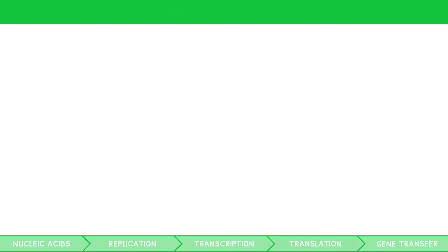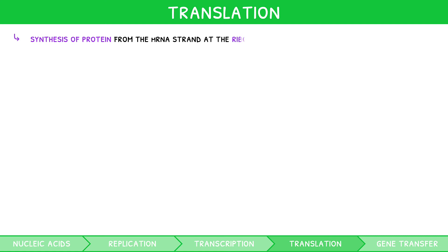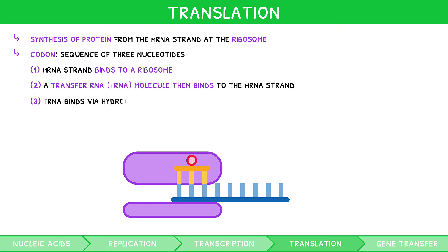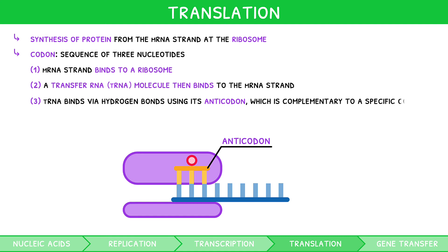So where is the production of protein? Cue translation. Translation is the synthesis of protein from the mRNA strand at the ribosome. The term codon is often used — this is simply a sequence of three nucleotides that acts as a stop for enzymes regarding genetic information, i.e., enzymes read each codon before moving on to the next. First, the mRNA strand binds at the ribosome. A transfer RNA molecule then binds to the mRNA strand. The tRNA binds via hydrogen bonds using its anti-codon, which is complementary to a specific codon on the mRNA strand.